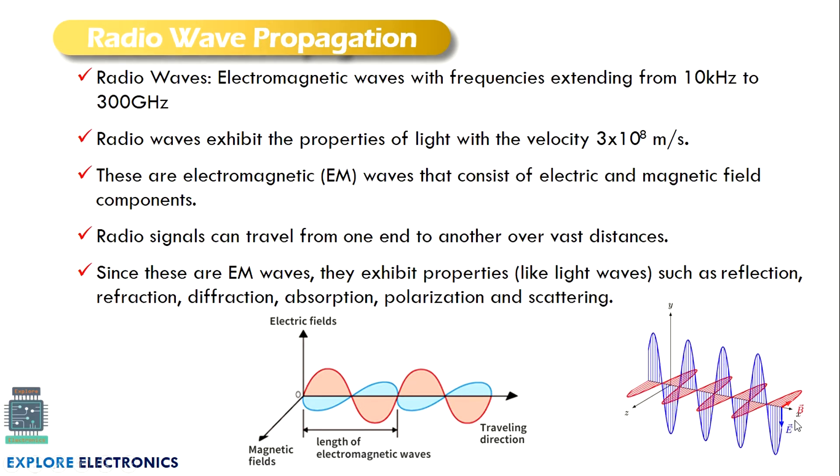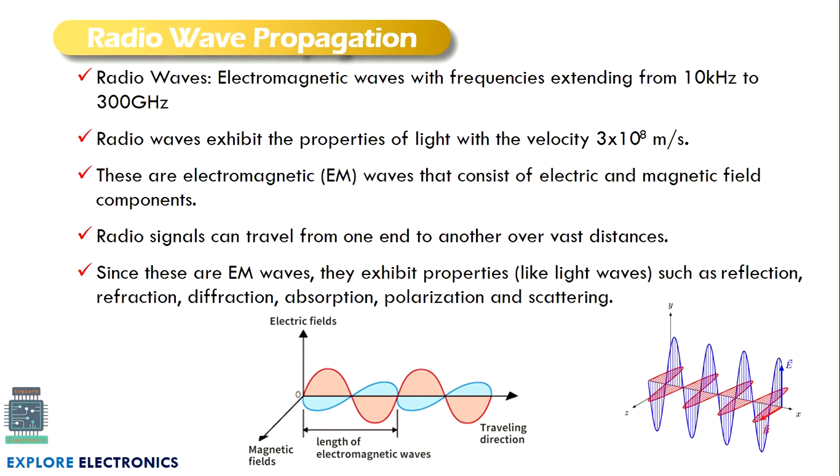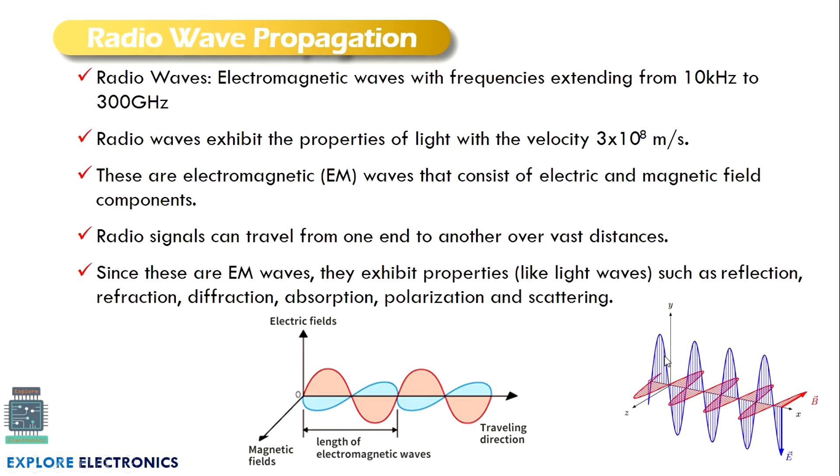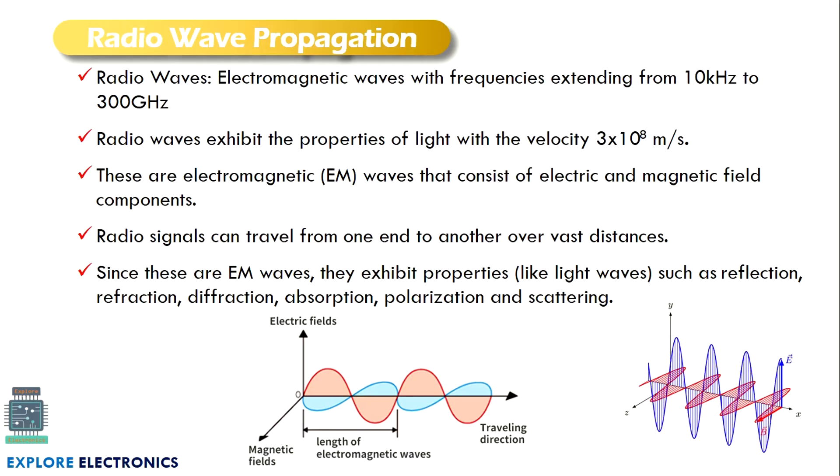These radio waves travel from one end to another over vast distances. For communicating over long distances, we use these radio waves. The properties which light exhibits, radio waves also exhibit - like reflection, refraction, diffraction, absorption, polarization, and scattering. All these properties occur for radio waves just as light waves.